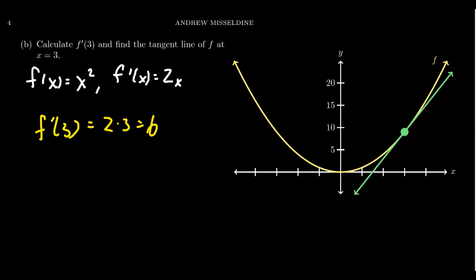This tells us that the slope of the tangent line at x equals 3 is going to be 6. So in general, a tangent line is going to look like y minus f of the value. In this case, it's 3. Then it's going to equal f prime of that value, and again, 3 times y minus x, x minus 3 right here.